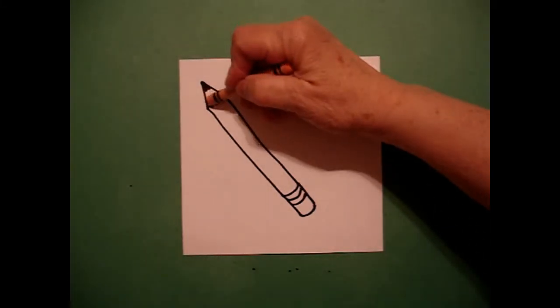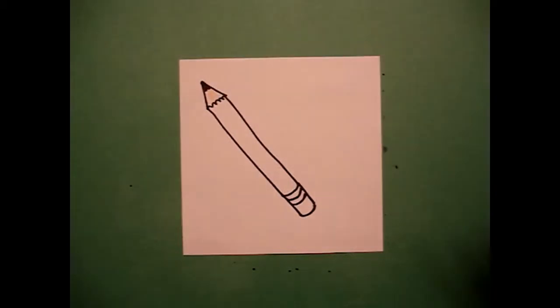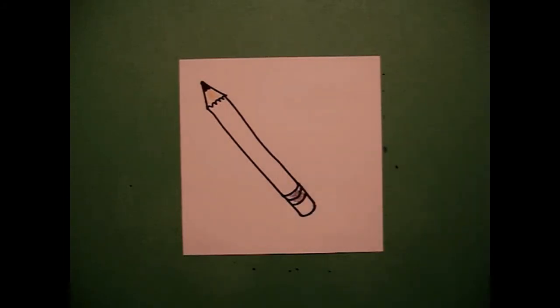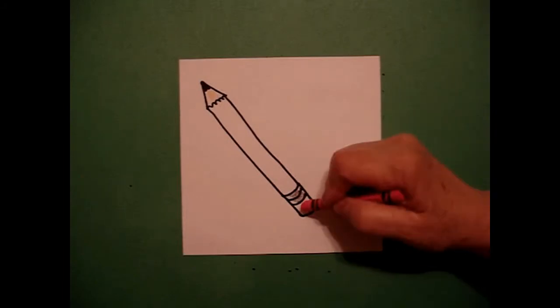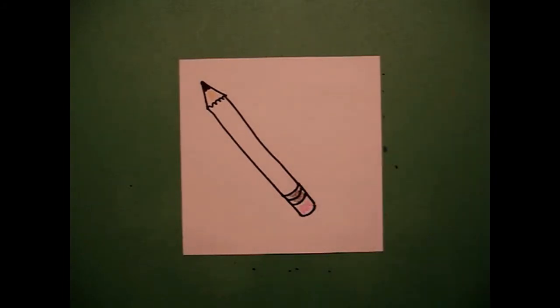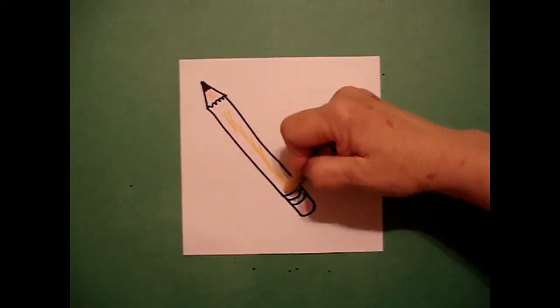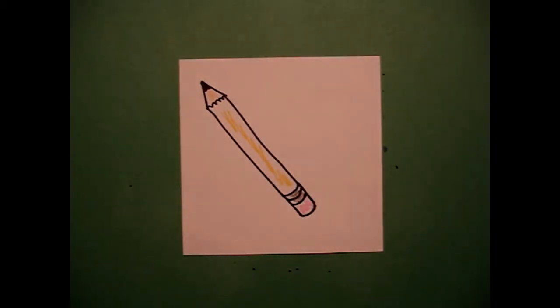Okay, for the little wooden pencil part I'm going to do that peach. I'm going to come all the way down to the bottom and I'm going to color my two rings gray and I'm going to make my pink eraser down at the bottom and then I take my yellow and I color the inside part of my pencil.